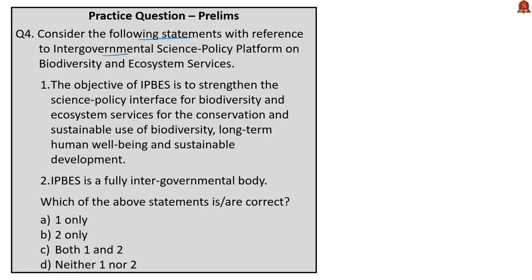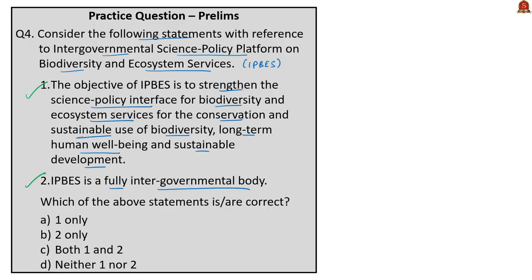Question 4: Consider the following statements with reference to the Intergovernmental Science-Policy Platform on Biodiversity and Ecosystem Services (IPBES). Statement 1: The objective of IPBES is to strengthen the science-policy interface for biodiversity and ecosystem services for the conservation and sustainable use of biodiversity, long-term human well-being and sustainable development — correct. Statement 2: IPBES is a fully intergovernmental body — also correct. NGOs, organizations, conventions and civil society groupings can only participate as observers; only governments of recognized countries can be members. The correct answer is option C: both 1 and 2.